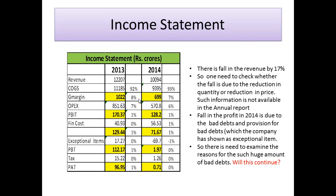As management, it is necessary to examine whether the revenue fall is due to quantity or price. There is a huge fall in profit in 2014, largely due to bad debts and provision for bad debts, which the company classified as an exceptional item. This bad debt, combined with the fall in revenue, caused profit after tax to fall dramatically from 96 crores to less than 1 crore. There is a need to examine the reasons for such a large bad debt in 2014.